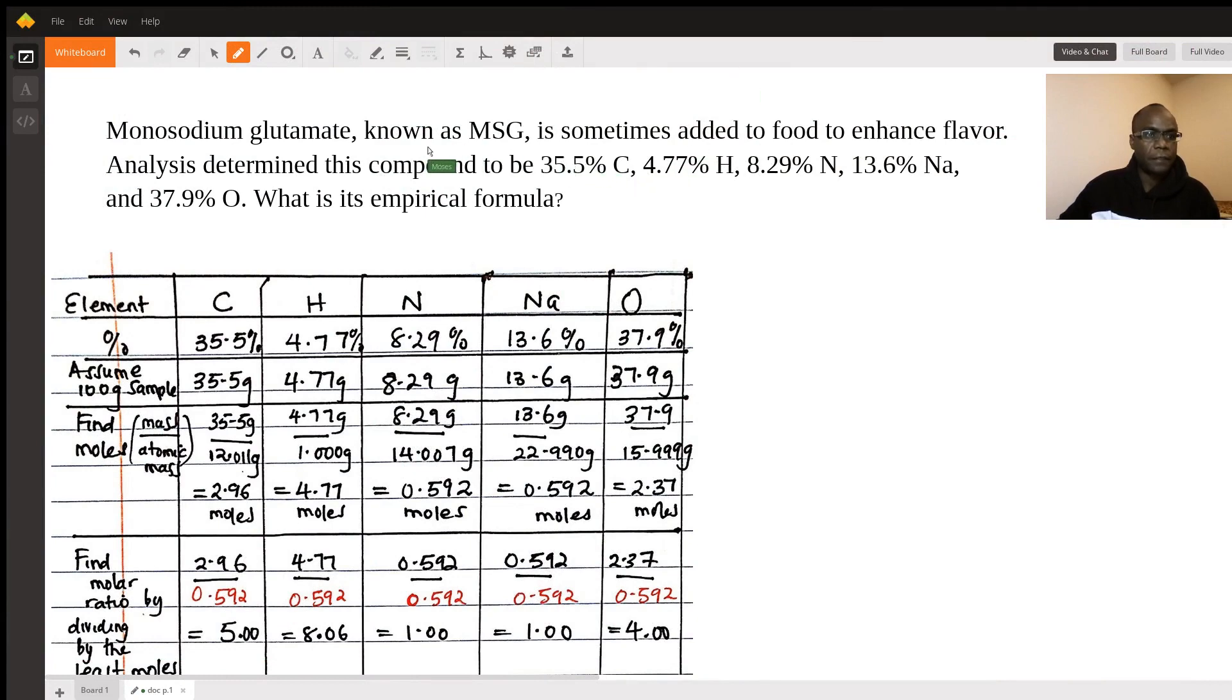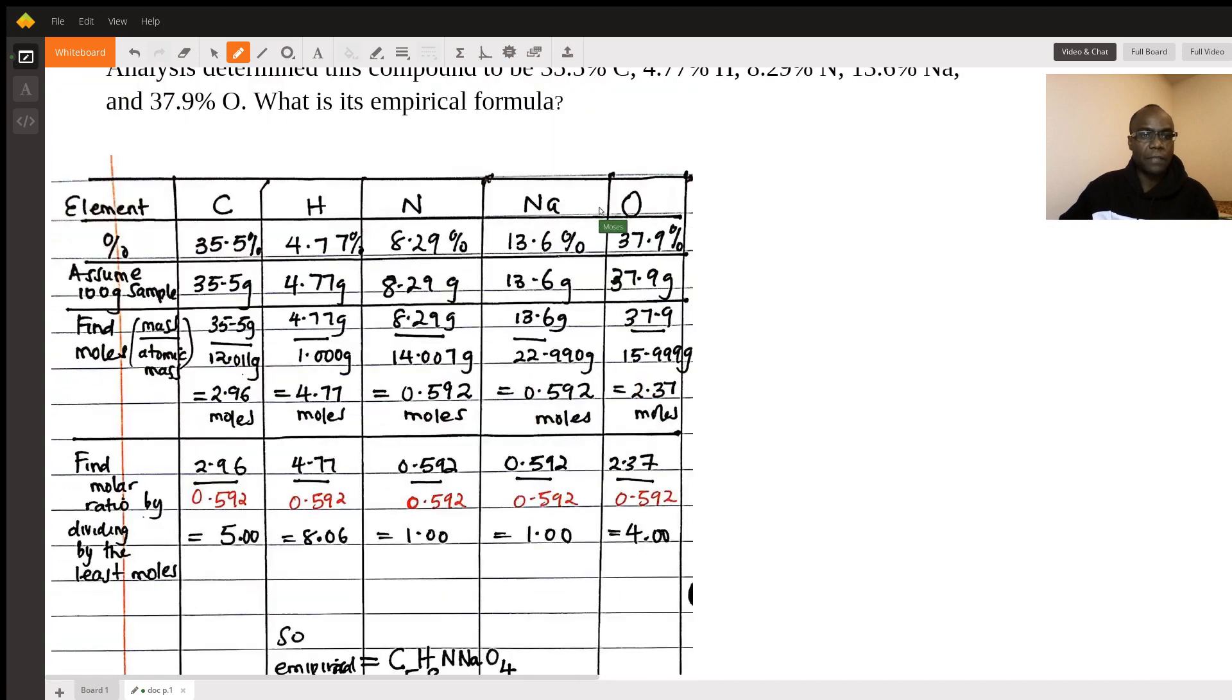Hello, Moses here. So this is a question looking for the simplest formula that you would get from monosodium glutamate. You're given the percentages, so I've set up a table for you right here. This is the easiest way you'll do it.